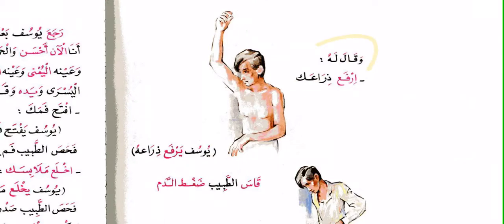وقال له: ارفع ذراعك — raise your arm. ارفع is the command form from رفع — he raised, يرفع he is raising, ارفع raise. يوسف يرفع ذراعه — Yusuf raises his arm. قاس الطبيب ضغط الدم — the doctor measured the blood pressure. ضغط means pressure, الدم means blood, and قاس is the past tense verb meaning to measure.